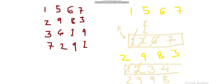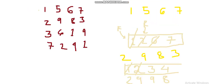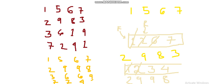Now we extend this to a 2D array. For every row of the matrix, we compute the 1D sliding window maximum array. For row [1, 5, 6, 7] the result is [1, 5, 6, 7]. For [2, 9, 8, 3] it becomes [2, 9, 9, 8]. For [3, 6, 1, 9] it becomes [3, 6, 6, 9]. For [7, 2, 4, 1] it becomes [7, 7, 4, 4]. This gives us a row sliding window maximum matrix.